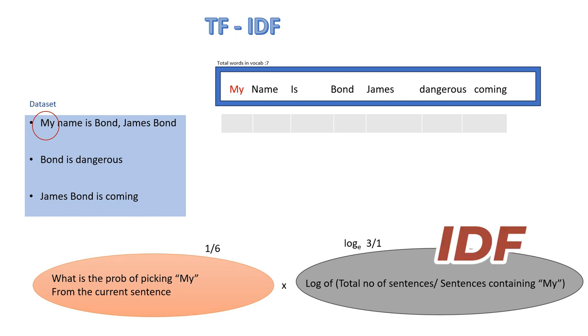Coming to IDF, it is defined as the log of ratio of all sentences to all the sentences containing the word 'my'. So there are total of three sentences in the dataset and one sentence has the word 'my' inside it.